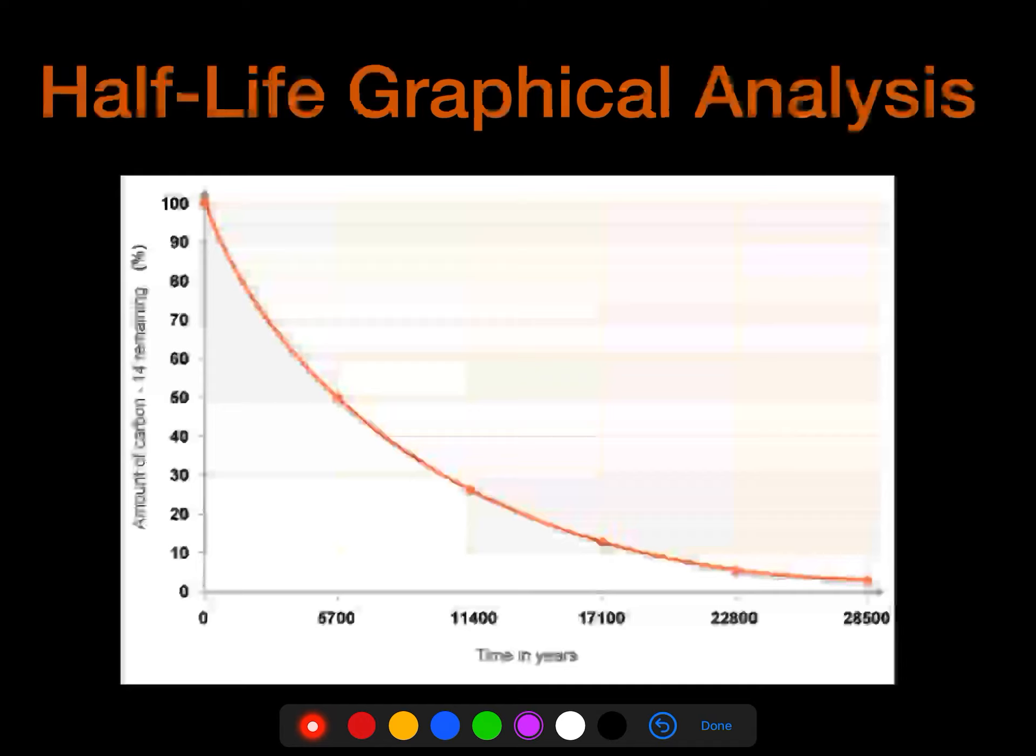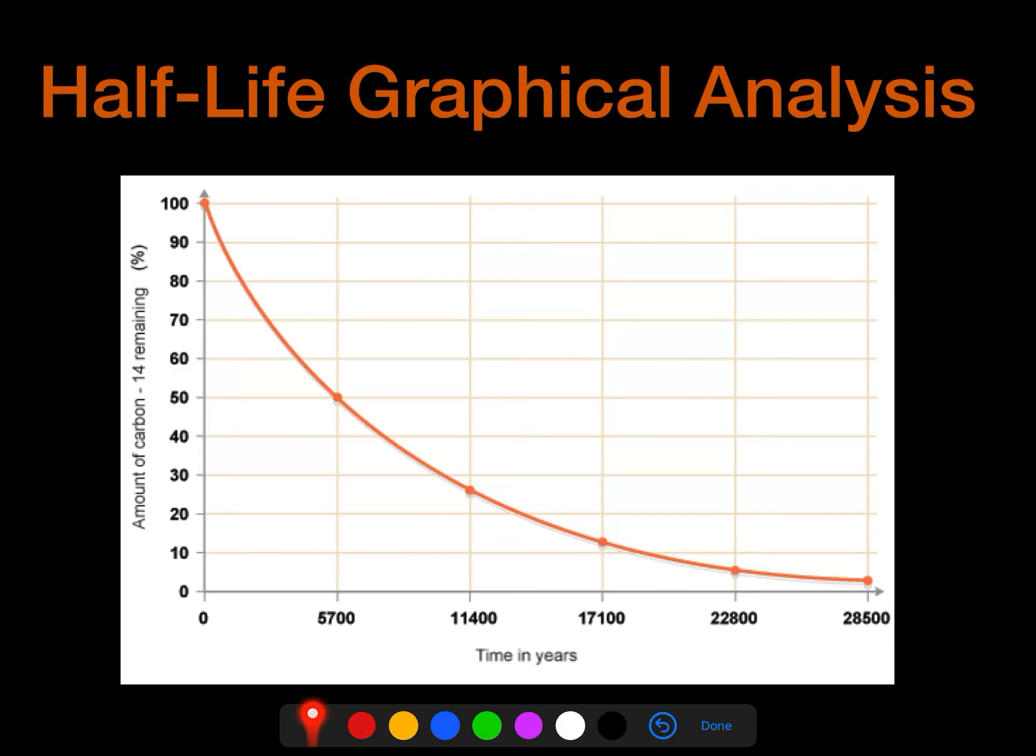The first one is graphical analysis, and so in this example, we actually have carbon-14, and this is the percent. It's really nice if these start with a hundred percent. If we have relative numbers, we can start with a hundred as well, and that always makes our graphs really nice, and then along the bottom, we have time in years. So this is a running time. This is not a half-life time, so we have to determine what the half-life time is.